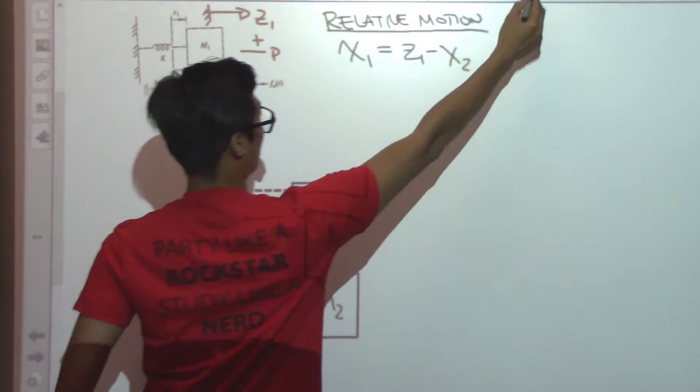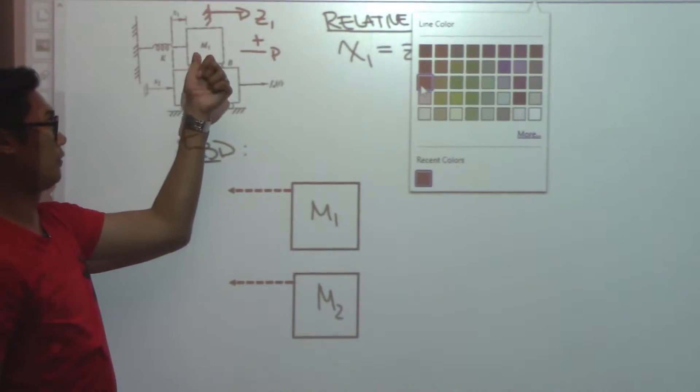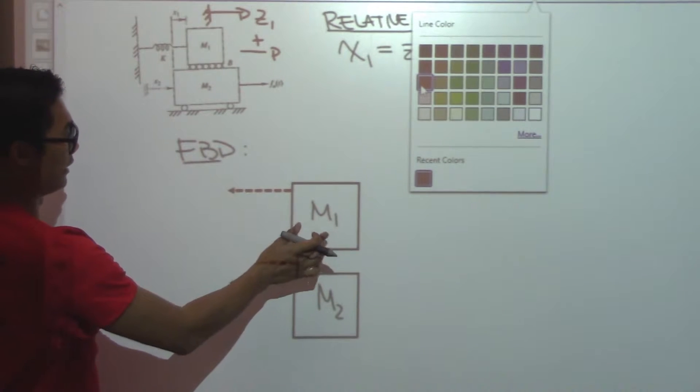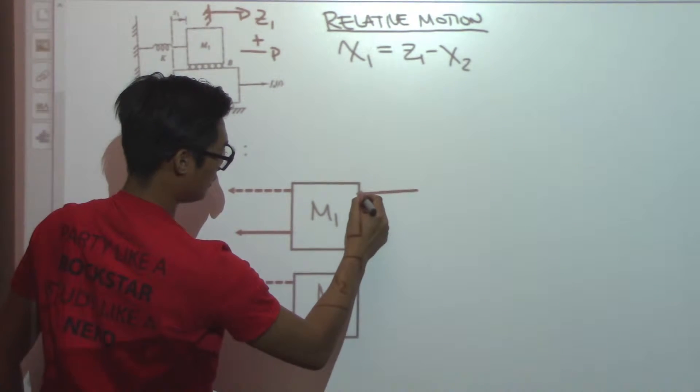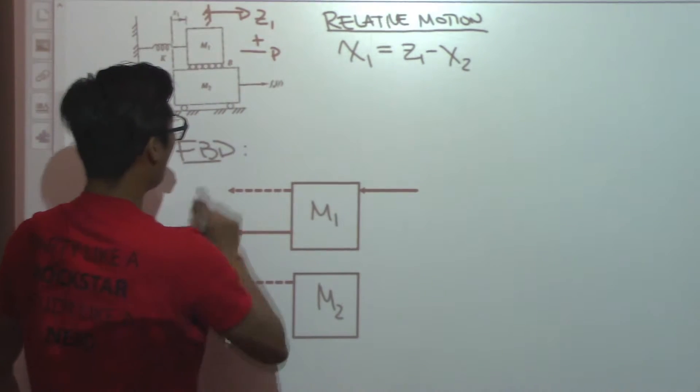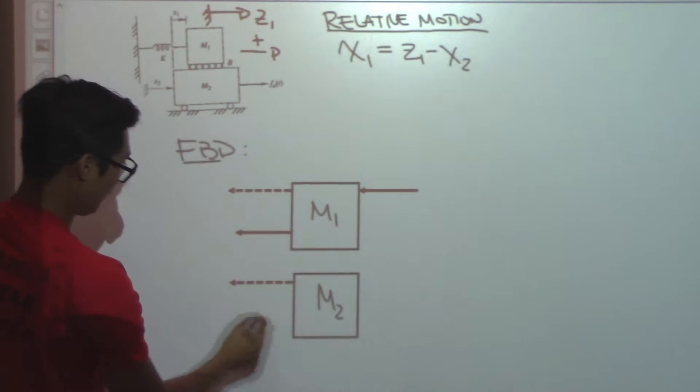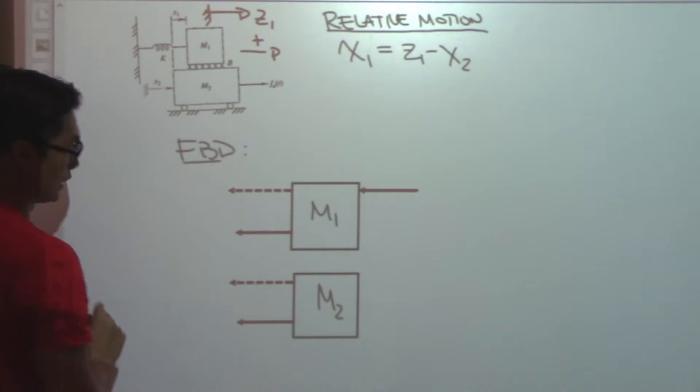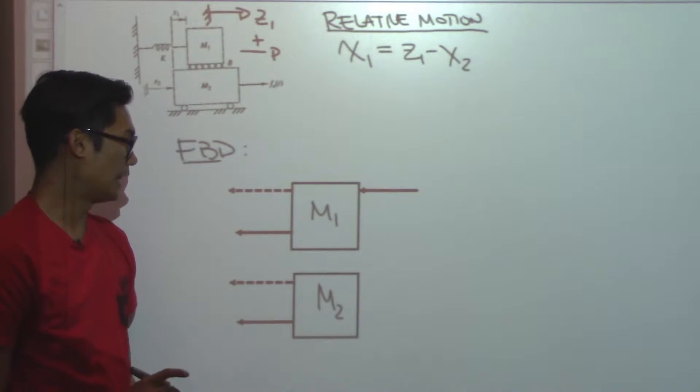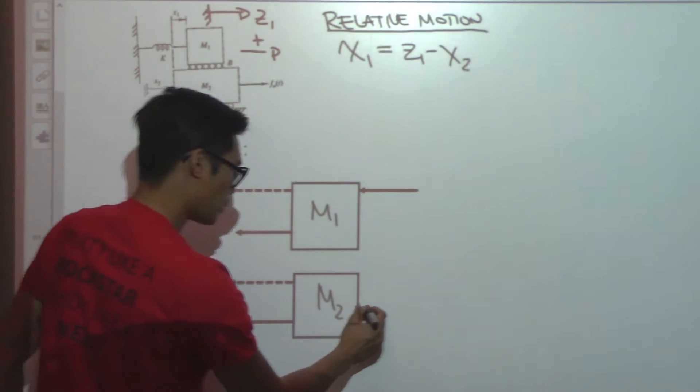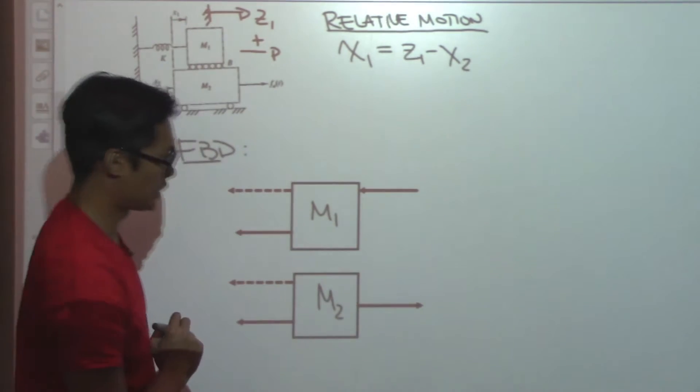And then similarly here, for the spring, for the damping, for M1, I'm going to also make them go towards the left. And for M2, since the inertial force is going to the left, for damping, I'm going to make it move towards the left as well. And you'll see why I make all these go towards the left. Now, also acting on M2, I have the force applied.